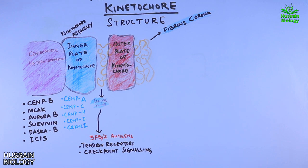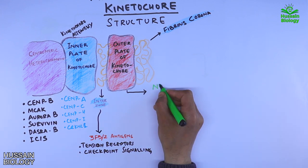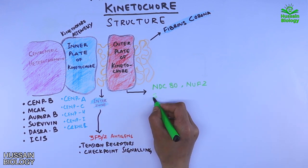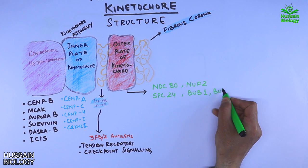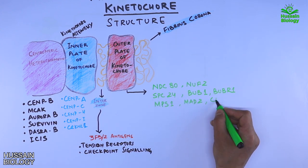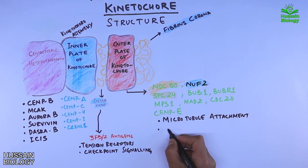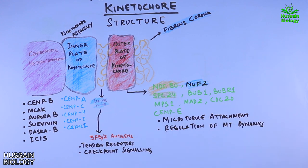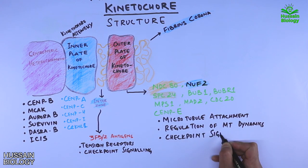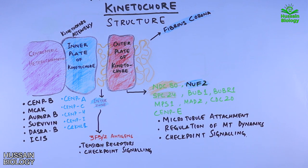The outer plate of the kinetochore contains proteins including NDC80, NUF2, SPC24, BUB1, BUBR1, MPS1, MAD2, CDC20, and CENP-E. These proteins help in microtubule attachment and regulation of microtubule dynamics. Most importantly, these proteins mediate the spindle assembly checkpoint — both the activation and the silencing of the spindle assembly checkpoint.